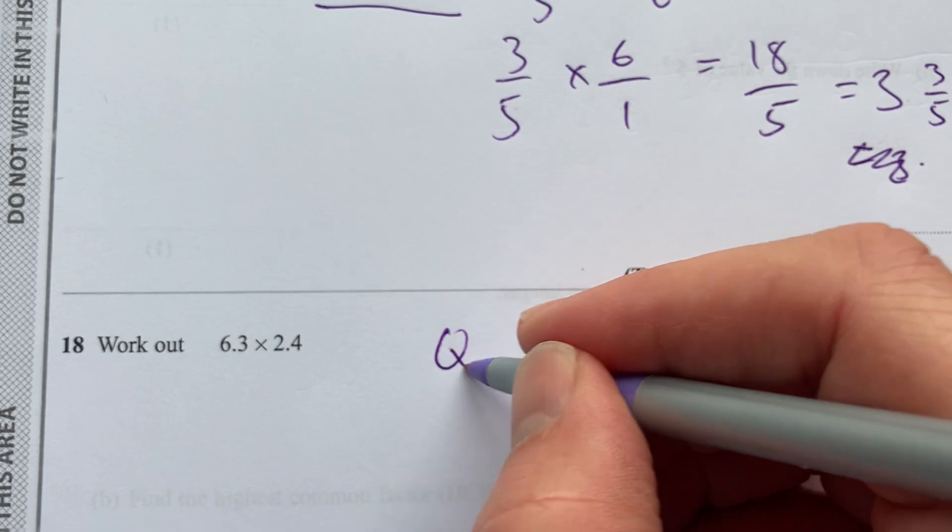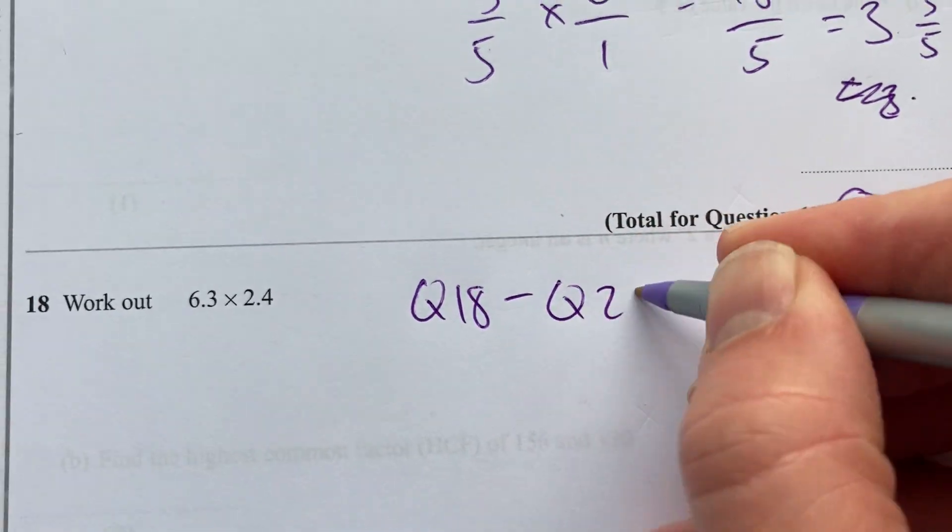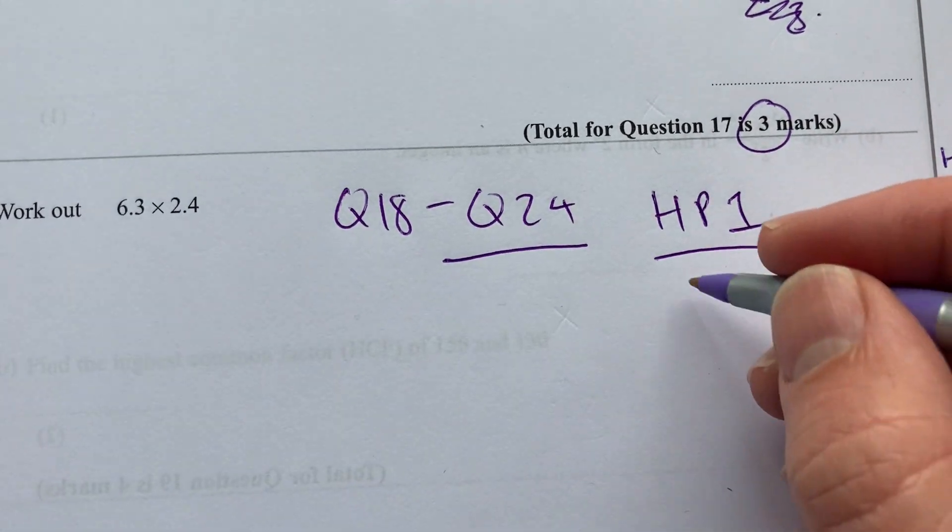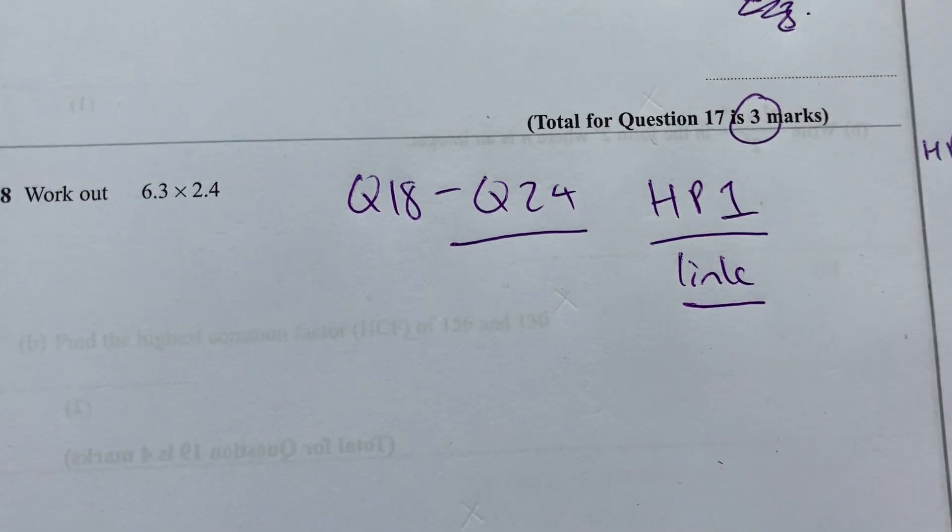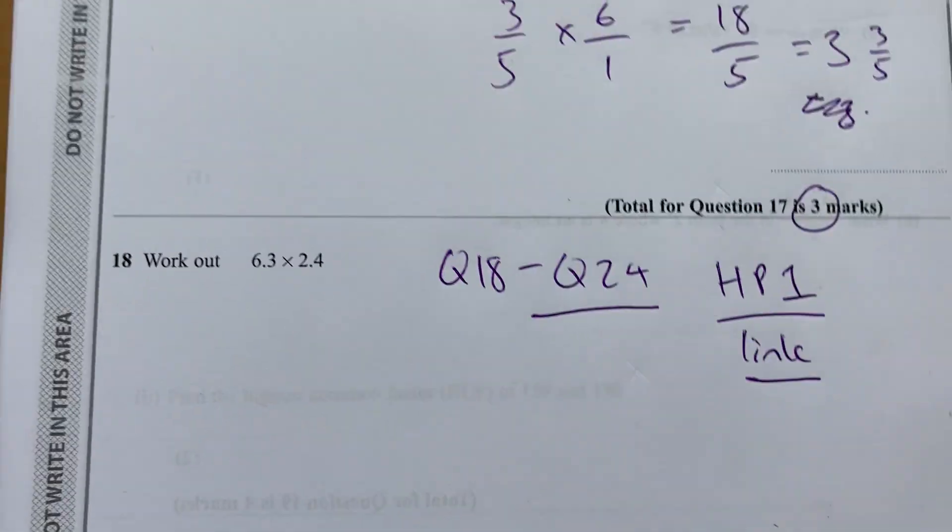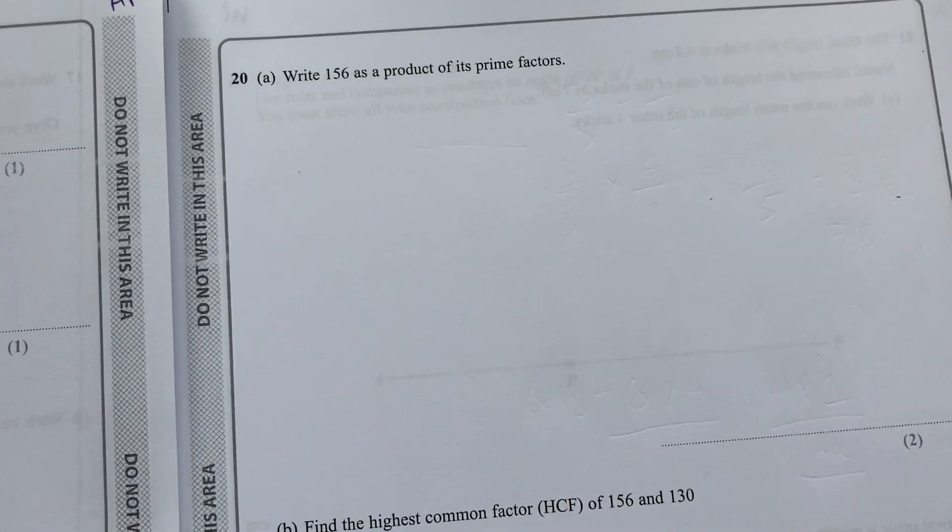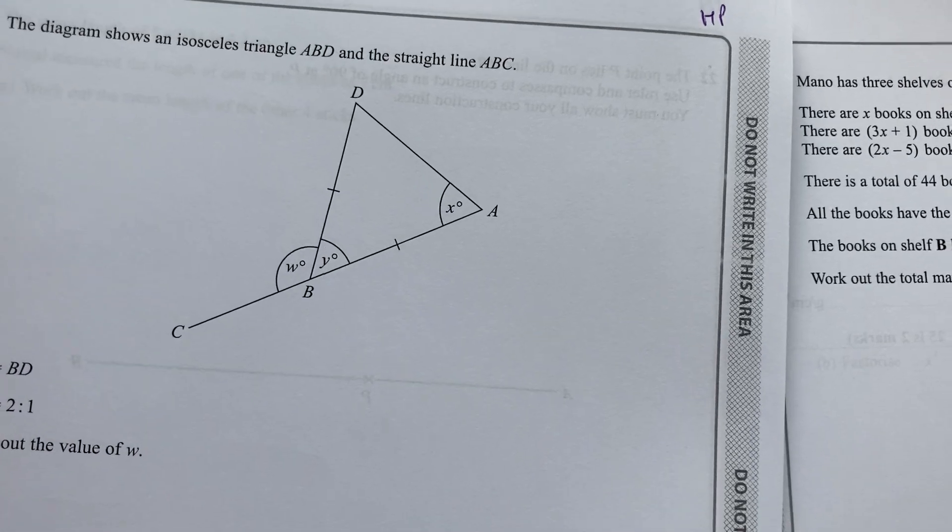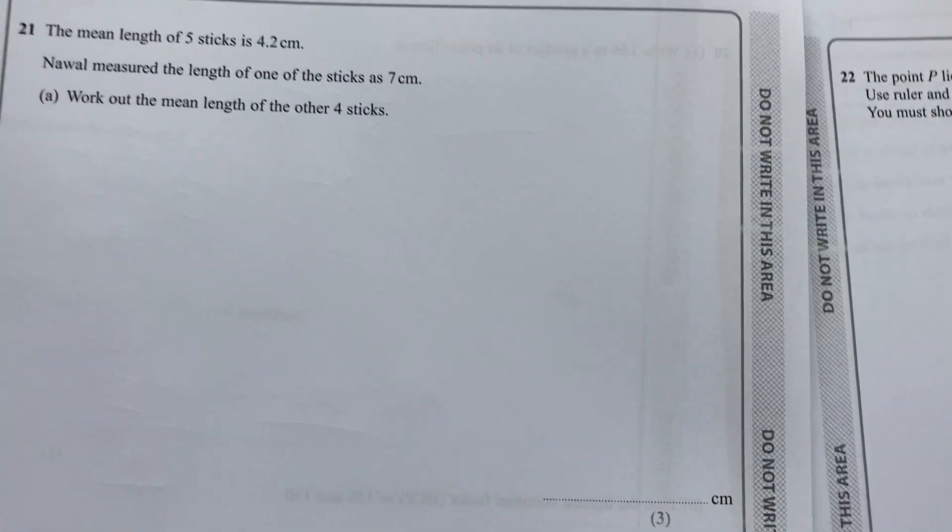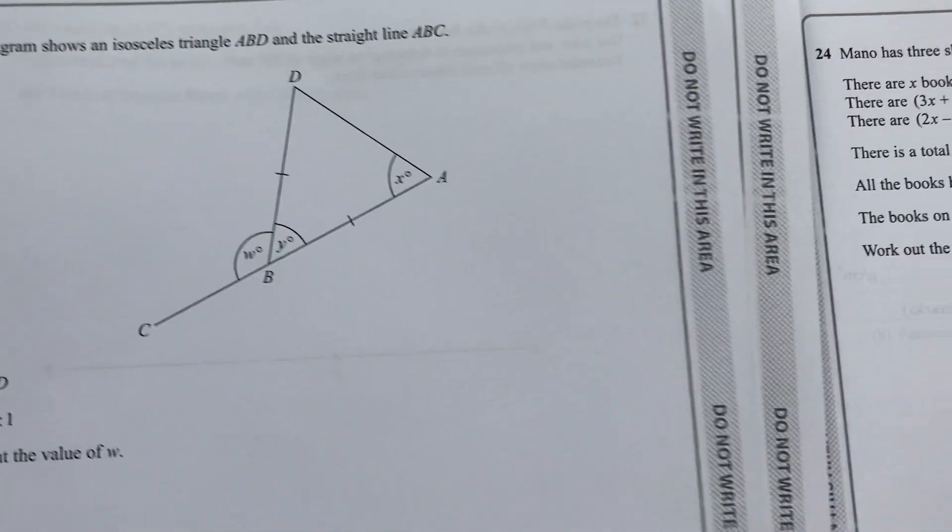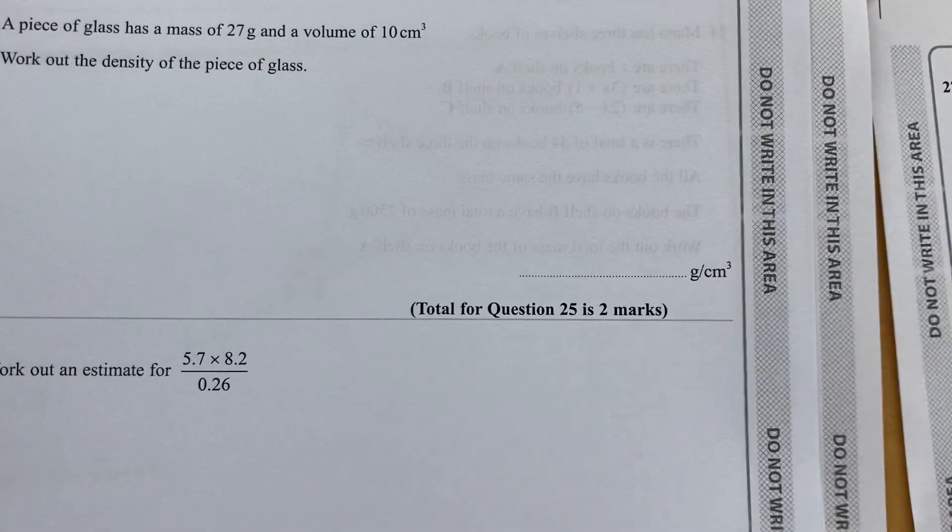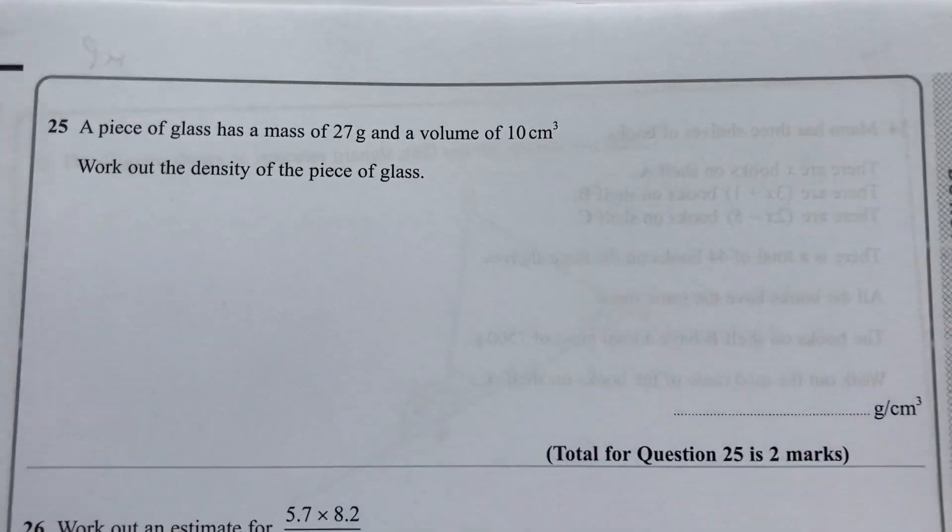Right, I'm now going to skip from questions 18 to 24 because they are the same as in the higher paper. So do have a look at that. I'll put that link in the description below because there's some overlap on these questions for question 18, 19, 20 on prime factors, 21, 22 as well, and 23 and 24. So do have a look at the higher paper. There's some overlap there. So let's jump to question 25 now.